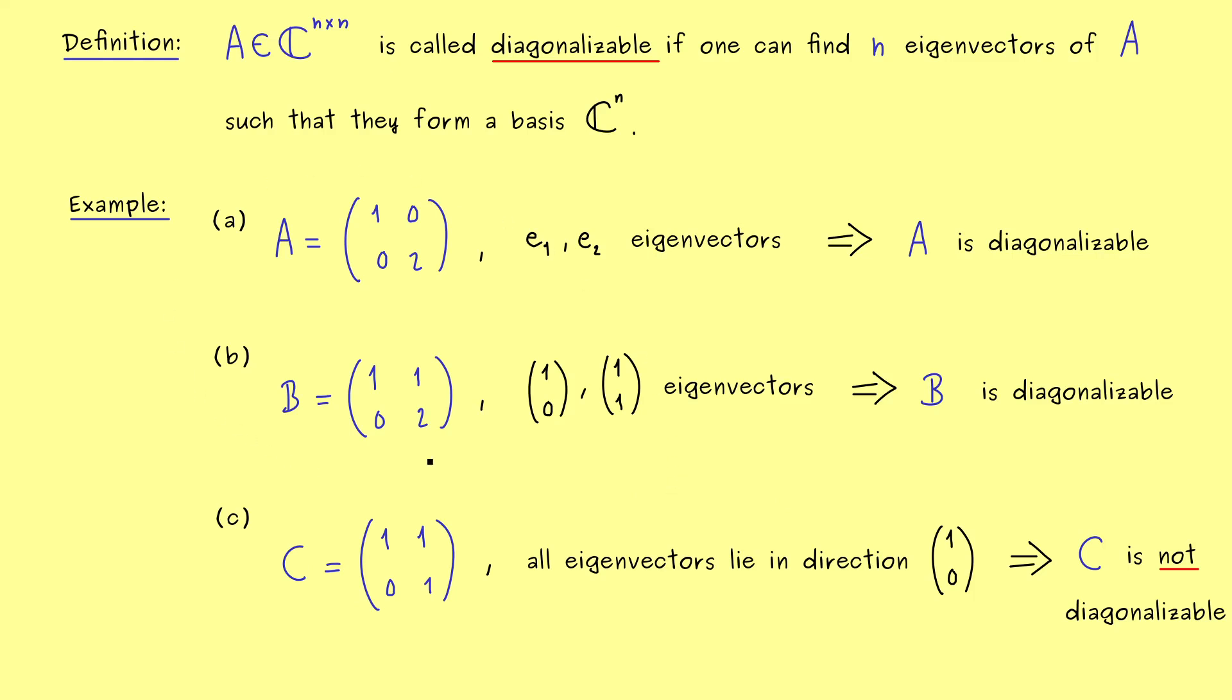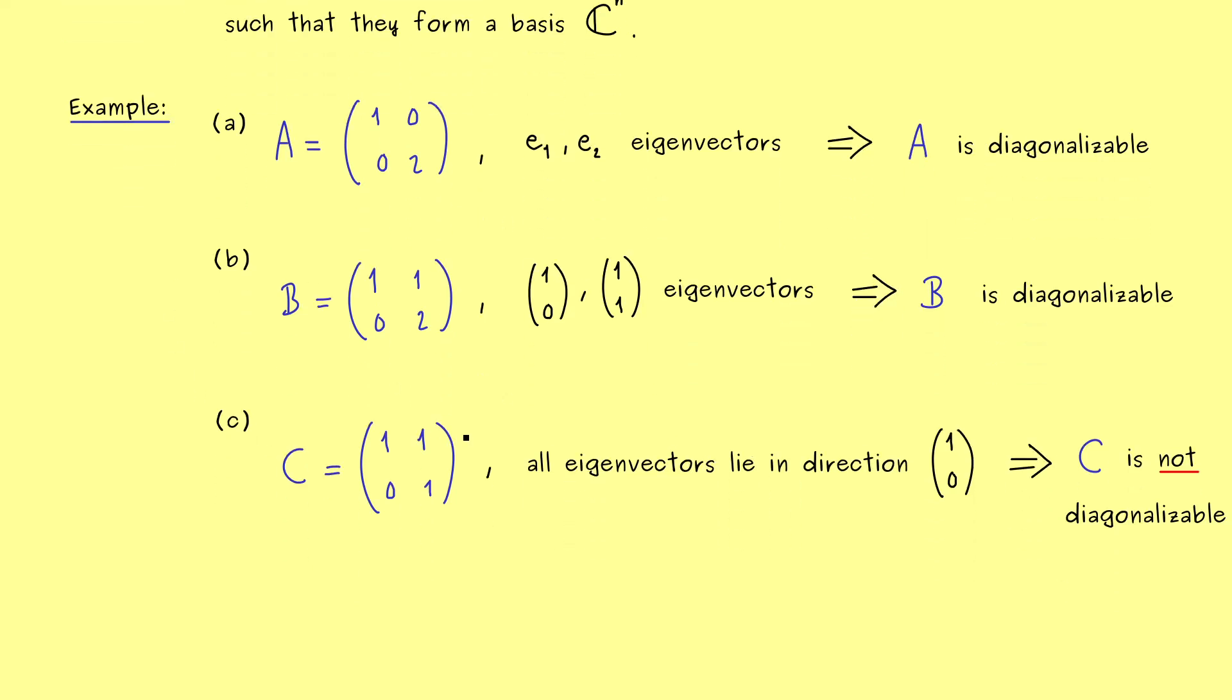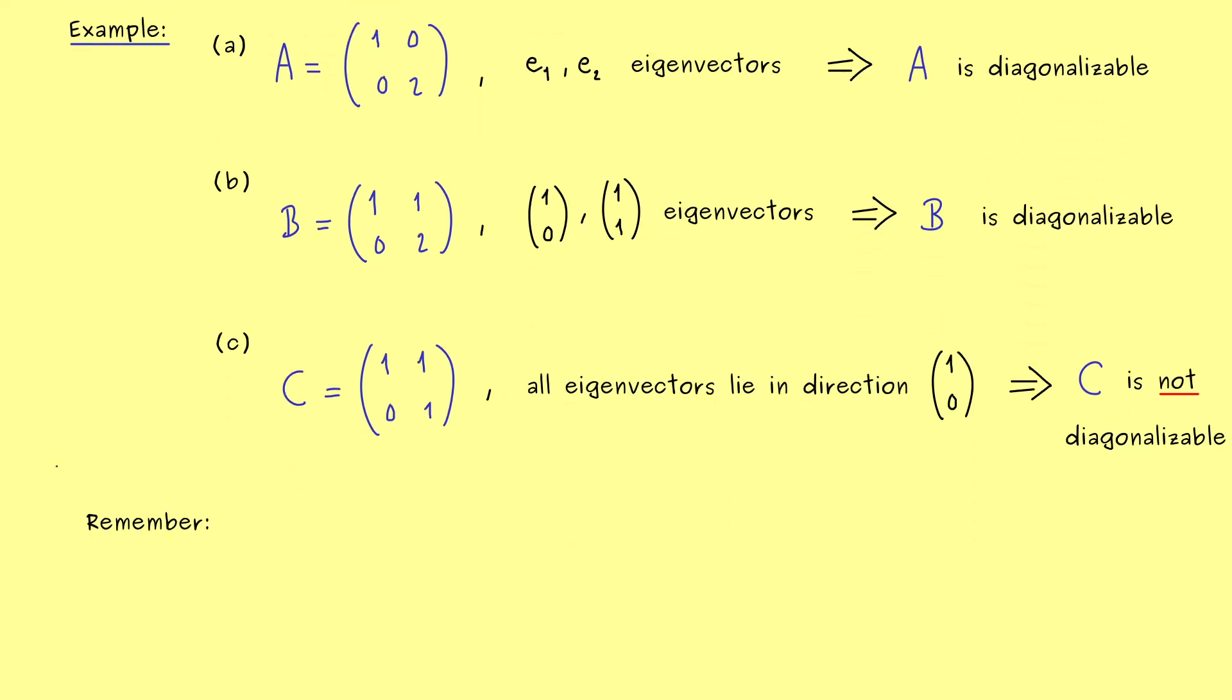Hence, we can immediately conclude that C is not diagonalizable. So in this case, we don't have enough directions for the eigenvectors. The eigenvectors cannot span the whole C^2. So we see, even for simple matrices, the property diagonalizability can fail. However, some subsets of matrices always fulfill this property.